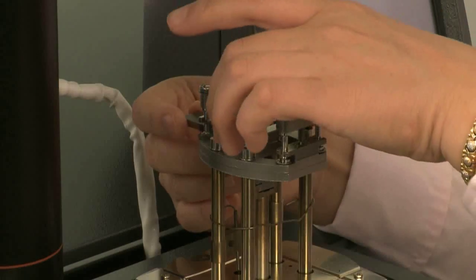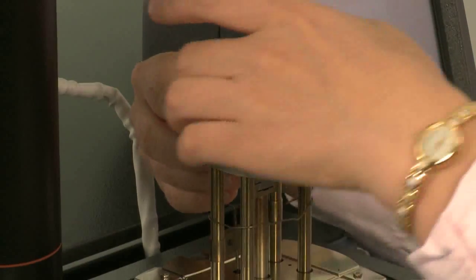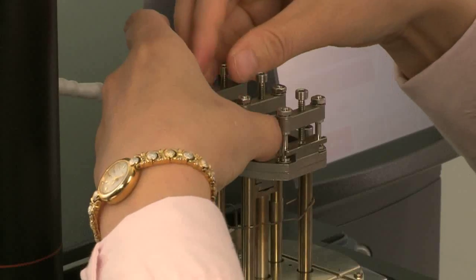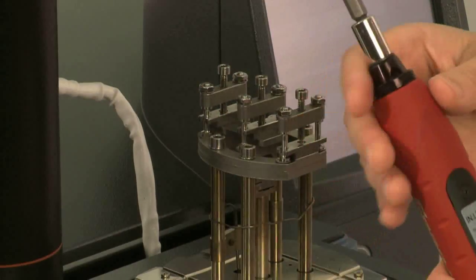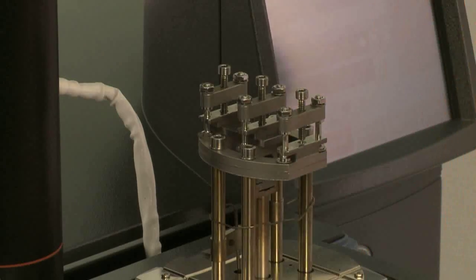Load the steel bar between the back of the stationary clamp and the movable clamp. Tighten the screws using the torque wrench with the torque range of 8 to 10 inch pounds.